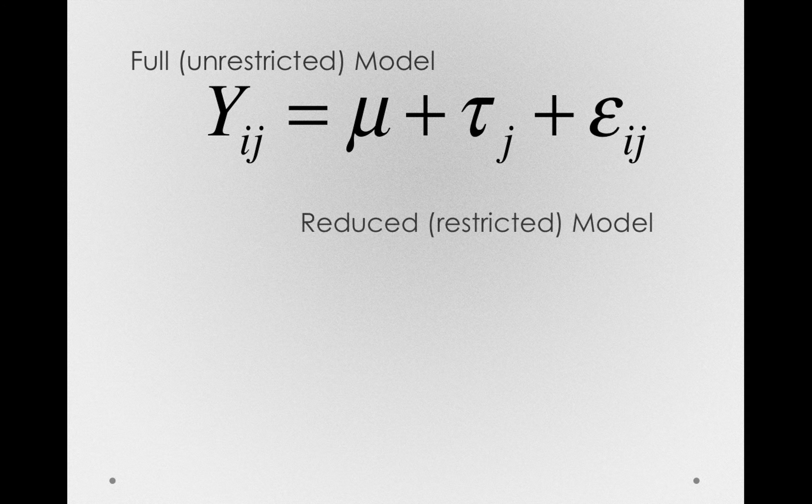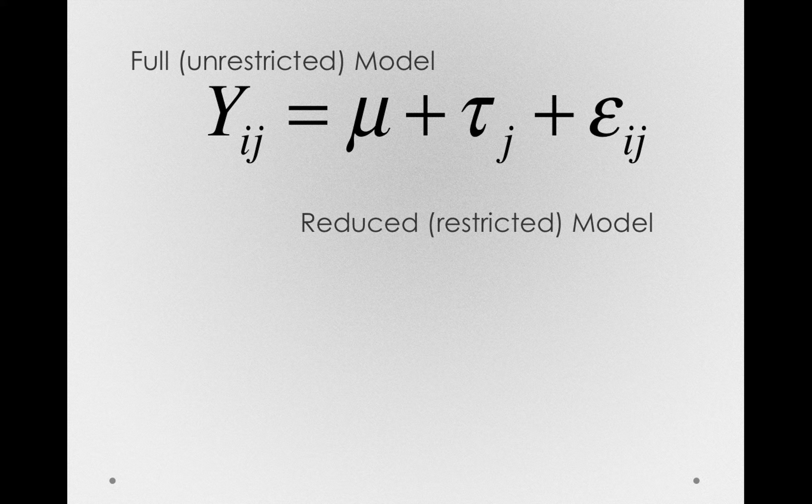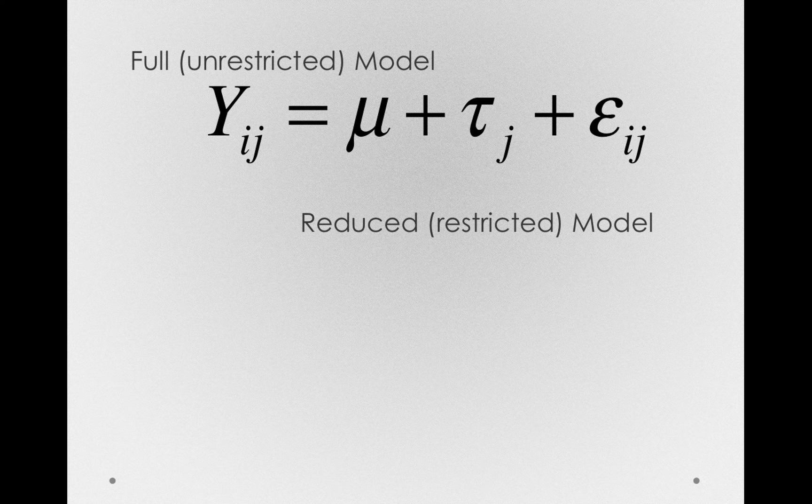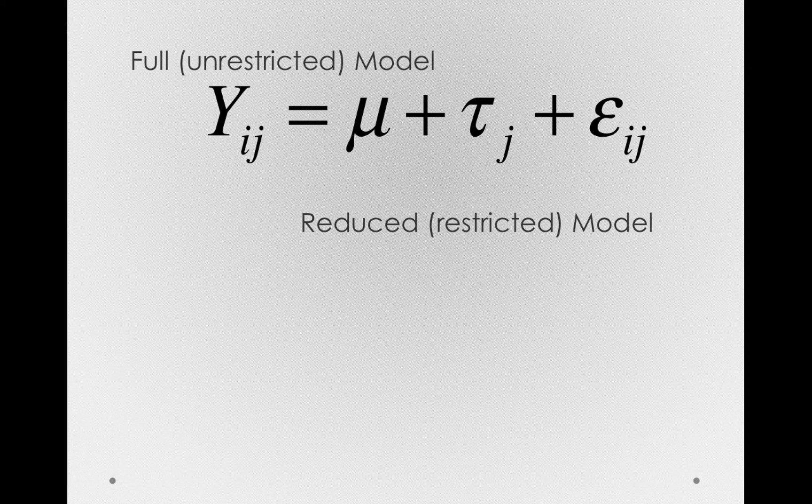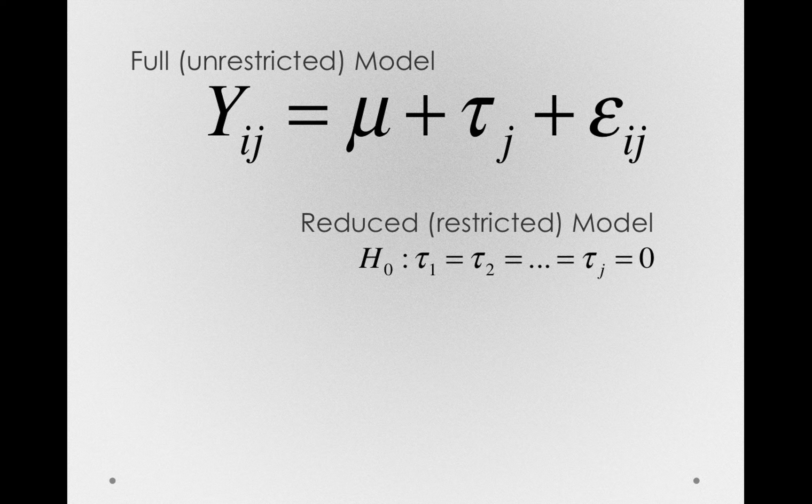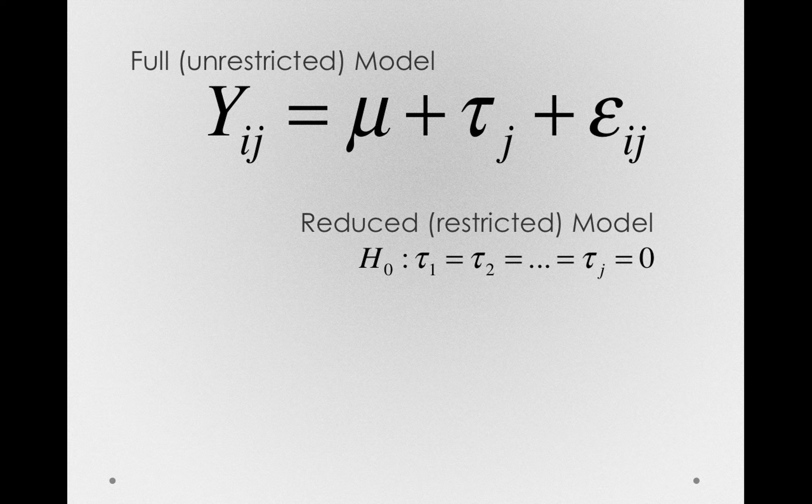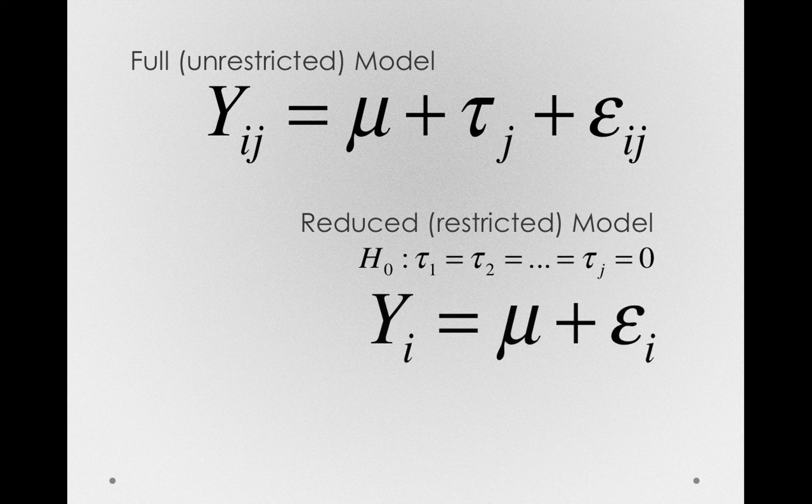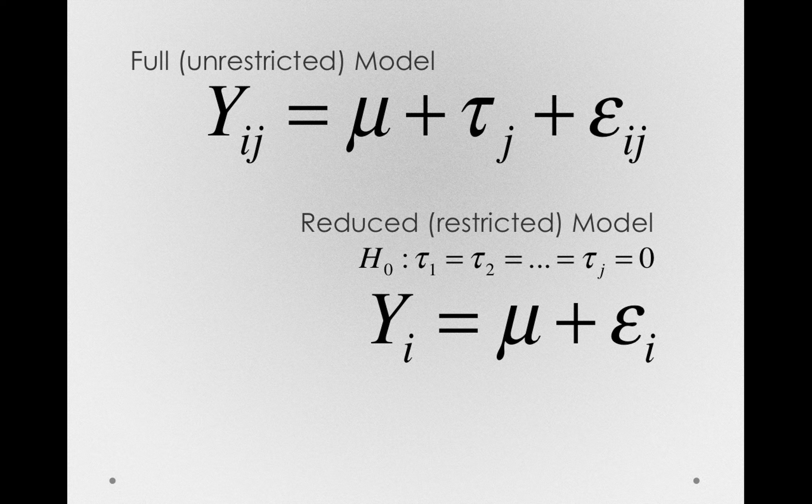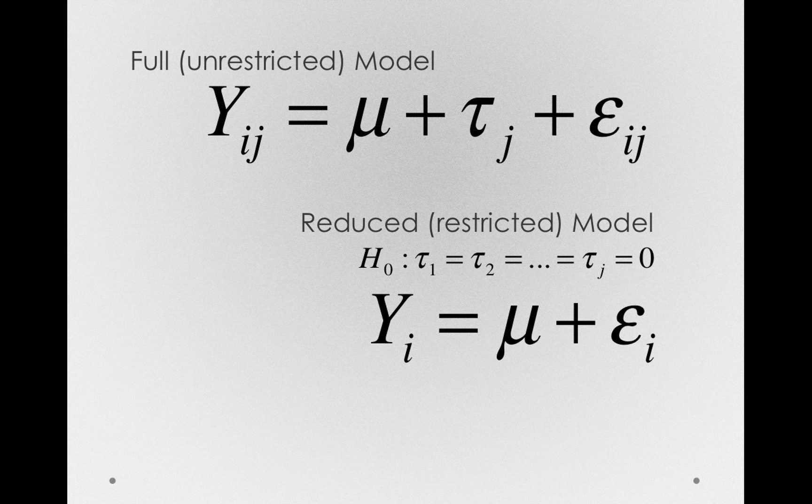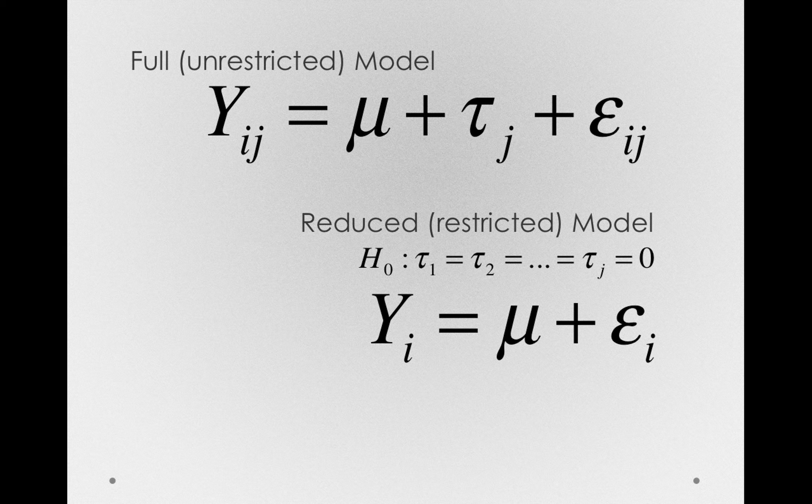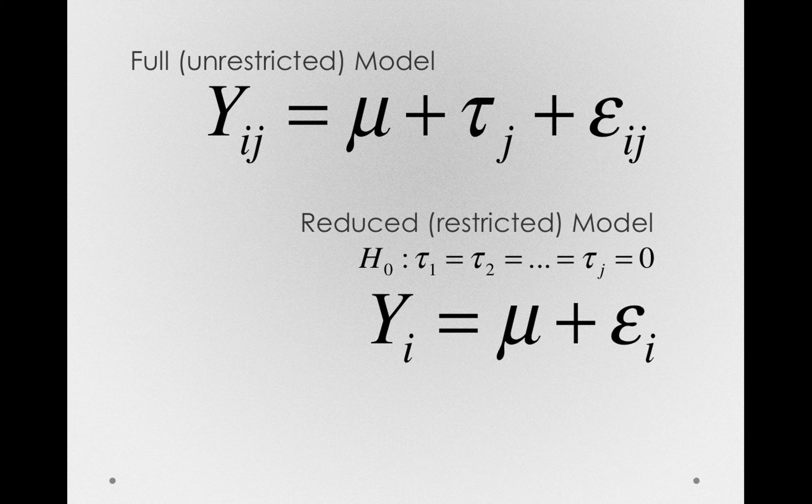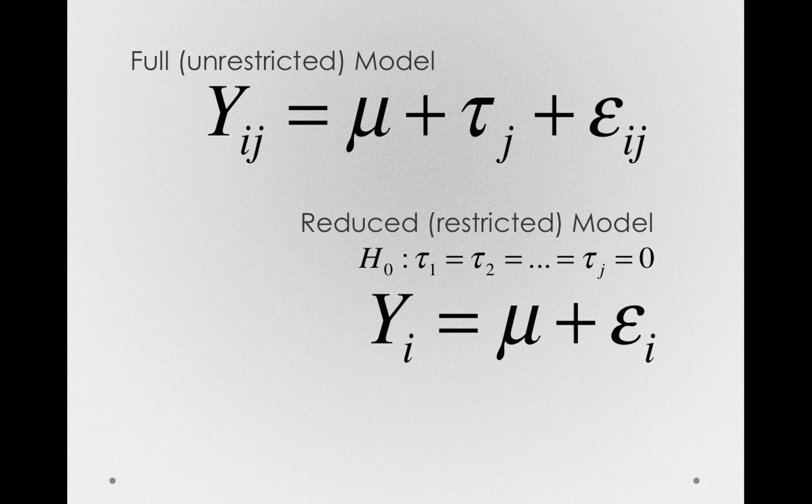The reduced, or restricted, model will hold one of these parameters constant. Specifically, we want to test whether those tau subj's are equal to zero. So what we're going to do is, under the null hypothesis, hold constant the tau subj's to be zero. So the reduced, or restricted, model is simply yi is equal to a grand mean plus error. So what we want to do is test whether the full, unrestricted model fits our data better than the reduced, restricted model.